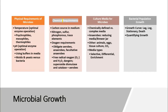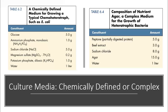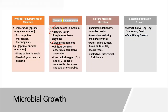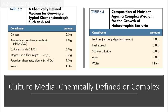We have been talking about carbon sources, nitrogen, oxygen requirements, and how growth is maintained. Now it's time to talk about culture media. Culture media can be chemically defined versus complex. We'll talk about all the different types of culture media, their properties, why we use them, and what bacteria are grown in them. Chemically defined media is typically for chemo-heterotrophs, meaning they take their carbon source from the medium and are not producing their own food.